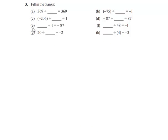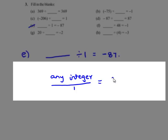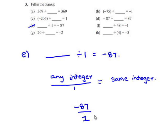We will see the next problem. Some integer divided by 1 gives the value negative 87. We know that any integer divided by 1 gives the same integer. Therefore, when negative 87 is divided by 1, this gives negative 87. Therefore, the answer is negative 87.